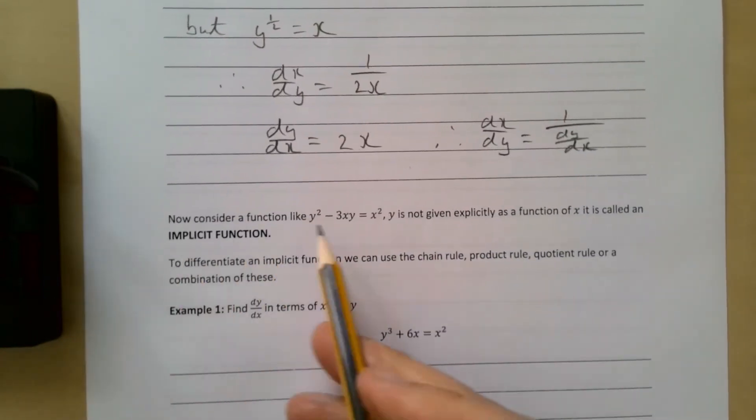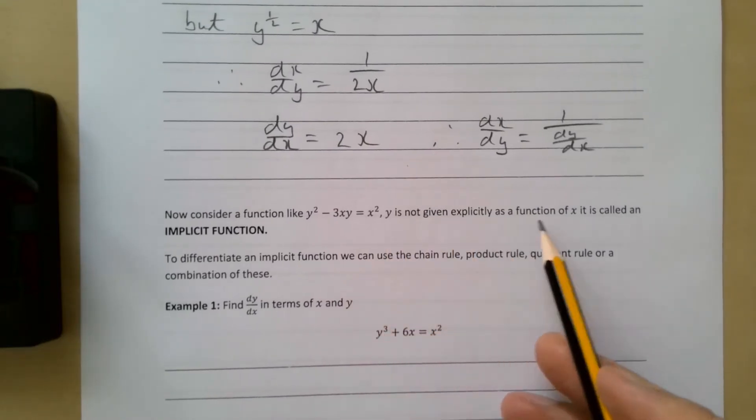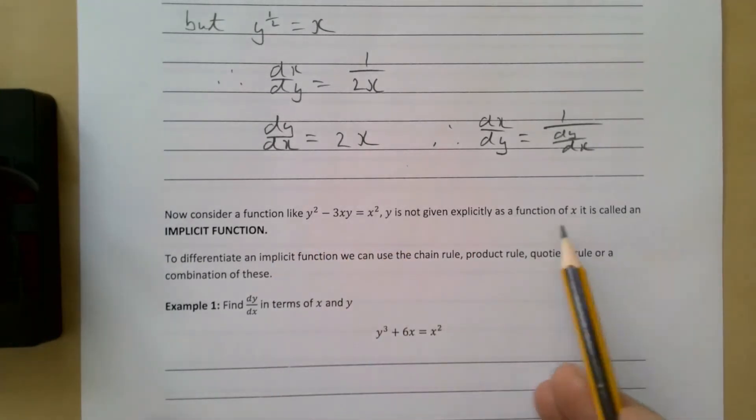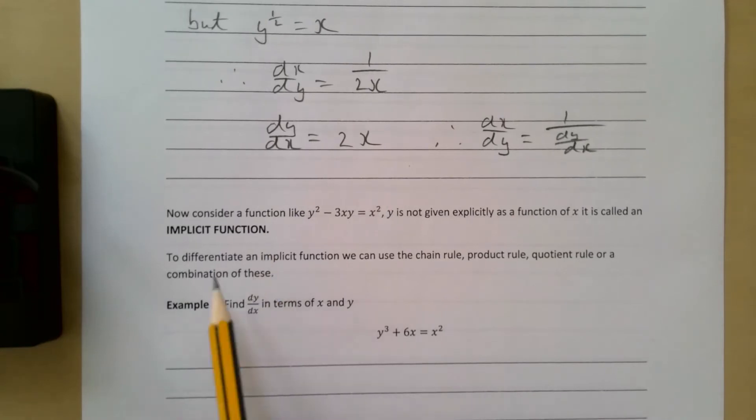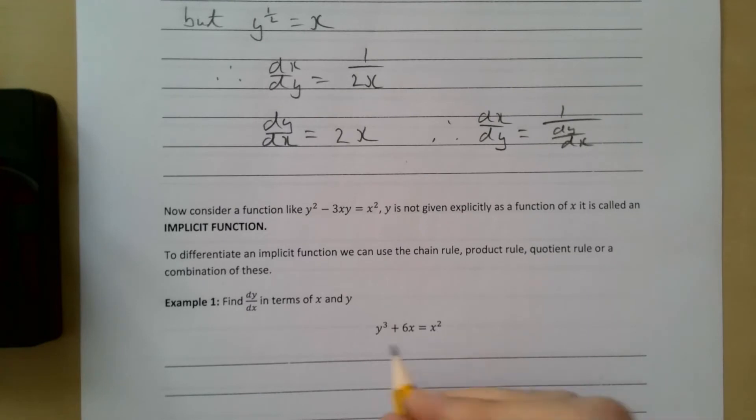Now consider a function like y² - 3xy = x². y is not given explicitly as a function of x—this is called an implicit function. To differentiate an implicit function, we can use the chain rule, the product rule, quotient rule, or a combination of these.